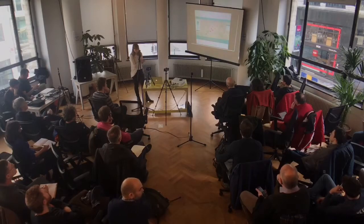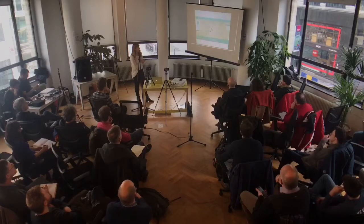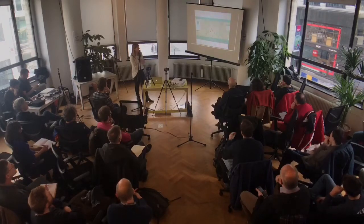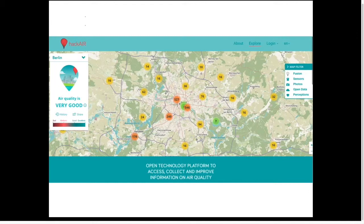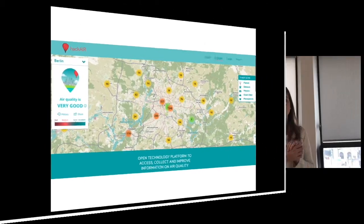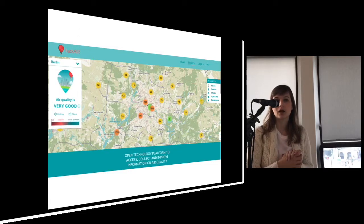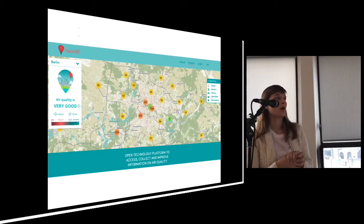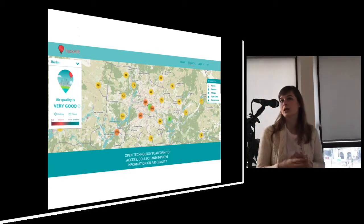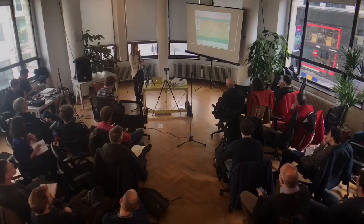This is a screenshot of the web platform we currently have. On the right side there are some filters — related to open data, you can find data from Luftdaten and from OpenAirQ. On the left-hand side there is the index provided by the European Environmental Agency. Related to that, we are also providing tips of the day and personalized recommendations — what you should do or not do when the air quality is bad, such as limiting sporting or picnicking, or for asthma patients, recommending to stay inside.